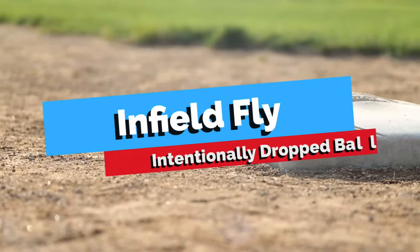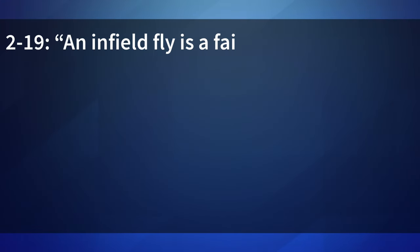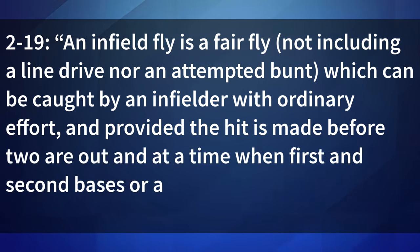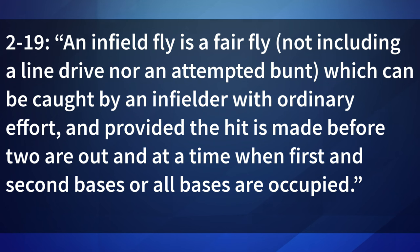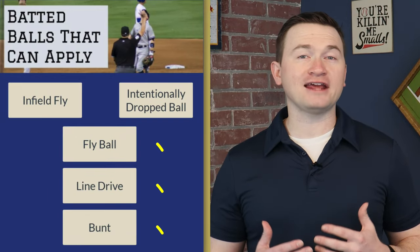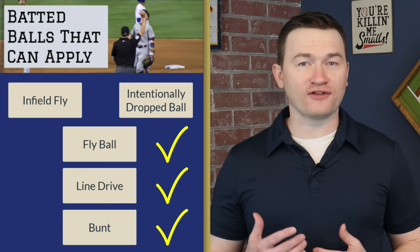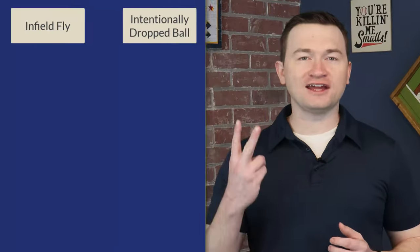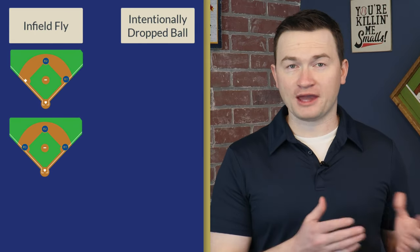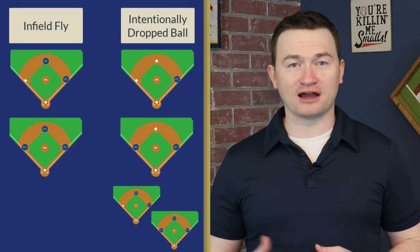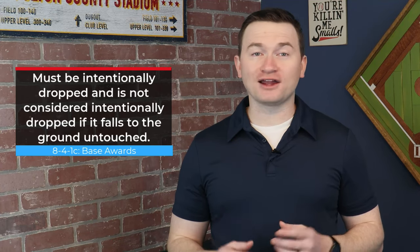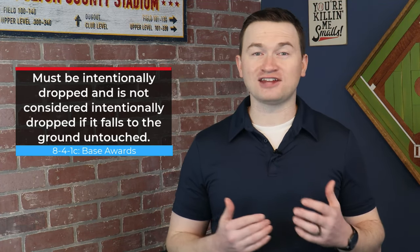Now to cover the differences between the two, let's touch on the definition of an infield fly. Rule 2-19: an infield fly is a fair fly, not including a line drive nor an attempted bunt, which can be caught by an infielder with ordinary effort, provided the hit is made before two are out and at a time when first and second bases or all bases are occupied. The first major difference is that the intentional drop rule can apply to any type of ball in flight, while the infield fly only applies to fly balls and doesn't apply to line drives or bunts. The second difference is an infield fly requires first and second, or first, second, and third bases to be occupied, while an intentional drop only requires that first base be occupied. The third key difference is how a ball becomes one or the other: a fly ball in an infield fly situation becomes an infield fly if it could be caught by an infielder with ordinary effort, regardless of if it is touched. For an intentional drop, by rule, a batted ball in flight can only become an intentional drop if it is physically touched and is intentionally uncaught by an infielder.